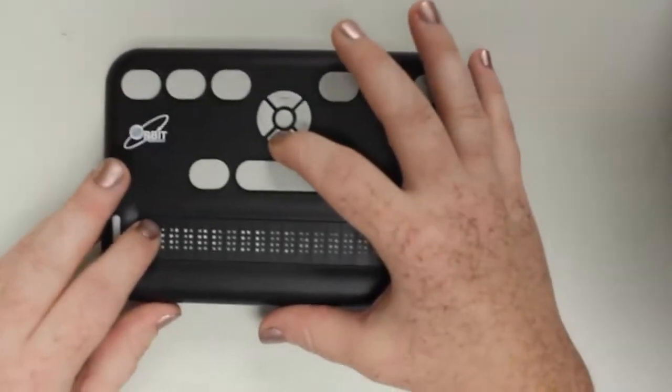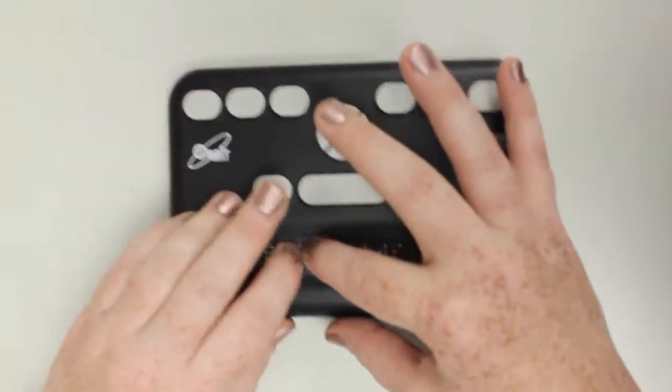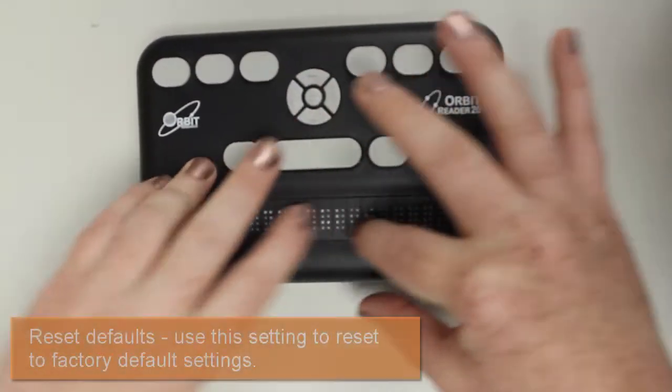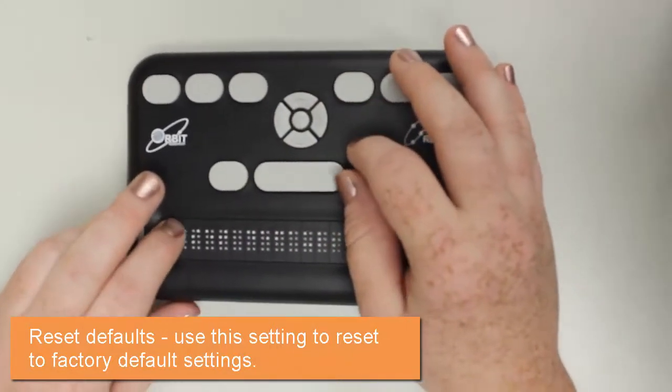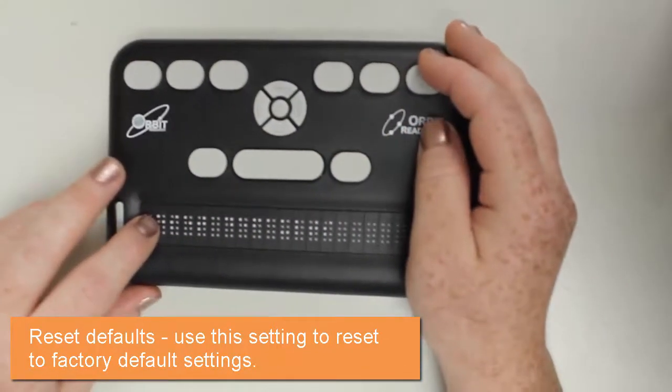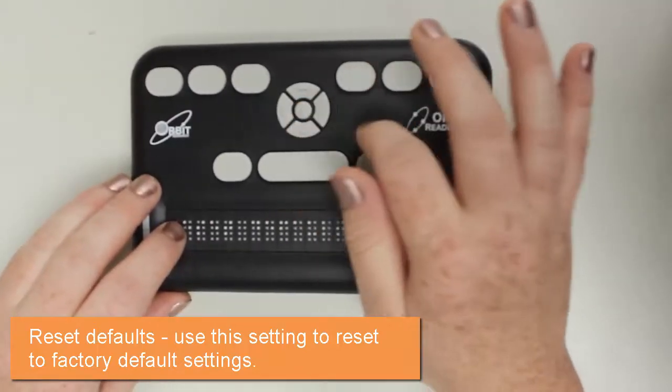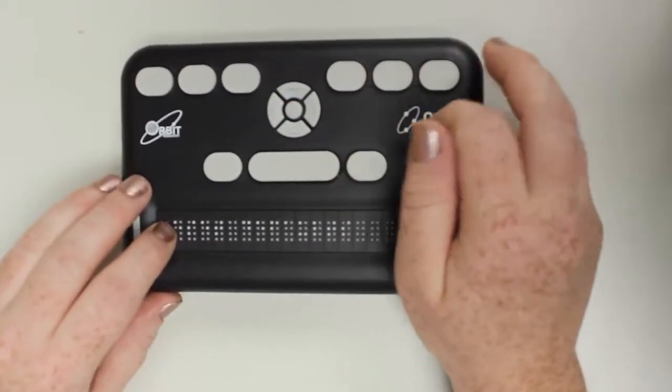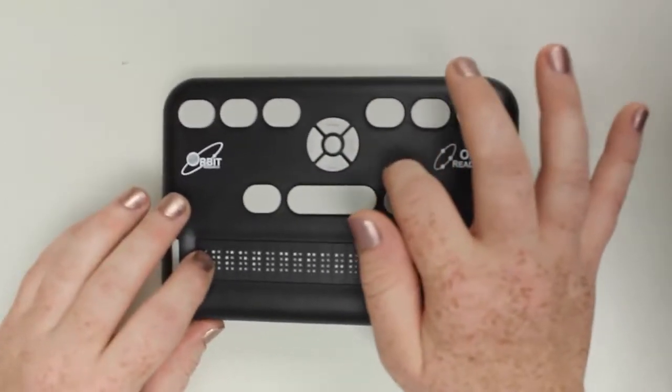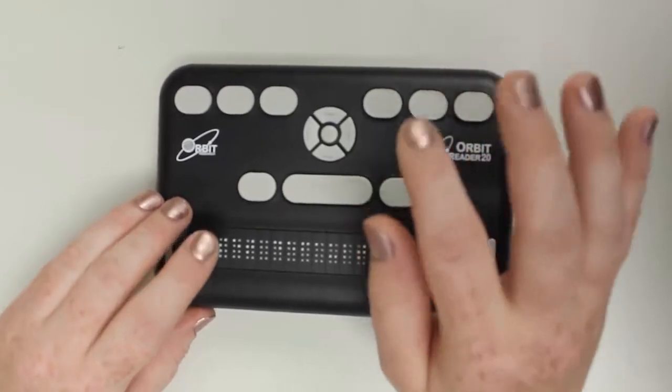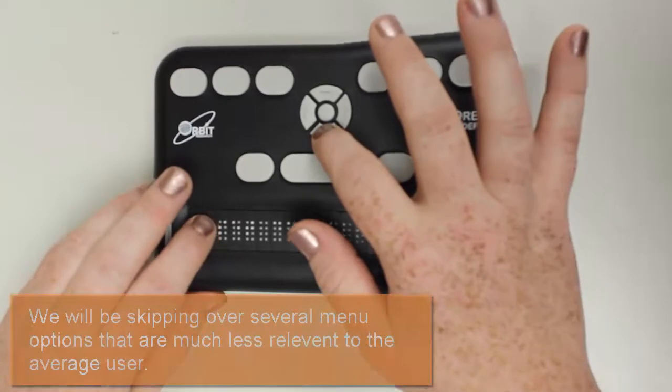The next option is reset defaults. Suppose you make a bunch of changes in your menus and you're not even sure what happened. You can reset the defaults, and I'm not going to do that because I don't want to, but you would just hit the select and any defaults like your language and stuff like that would be just reset. That's a nice option and a nice feature.